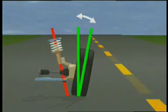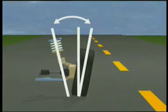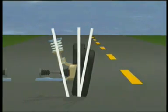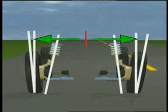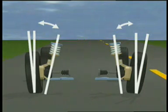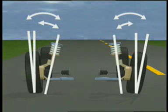Included angle is the combination of SAI and camber. Large side-to-side differences in SAI or included angle may indicate damaged suspension components.